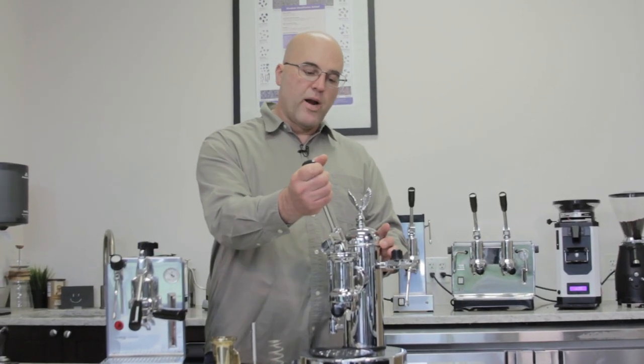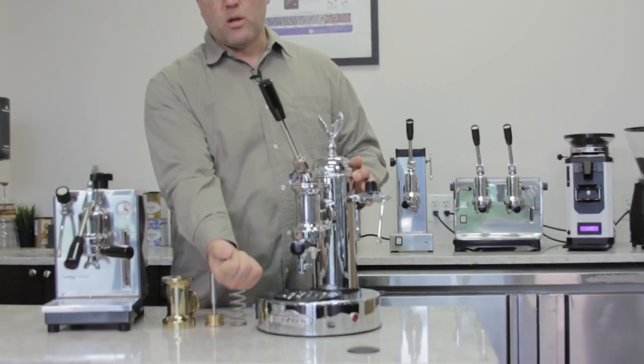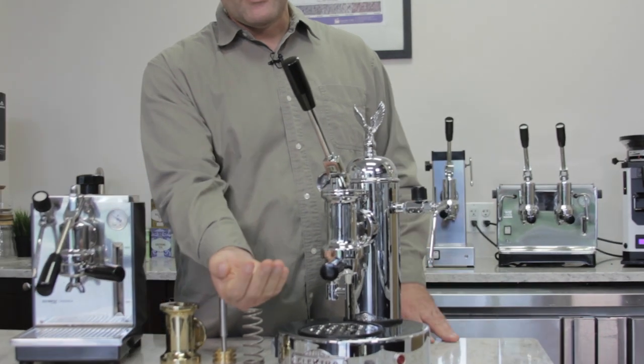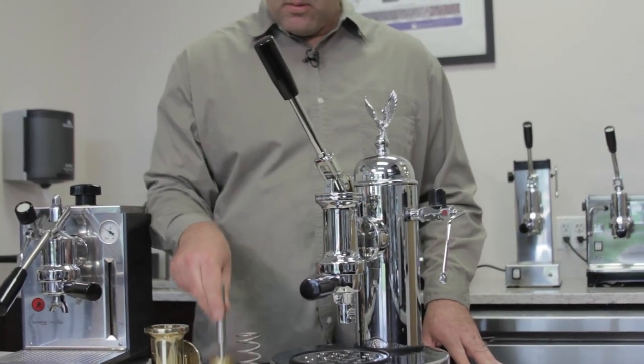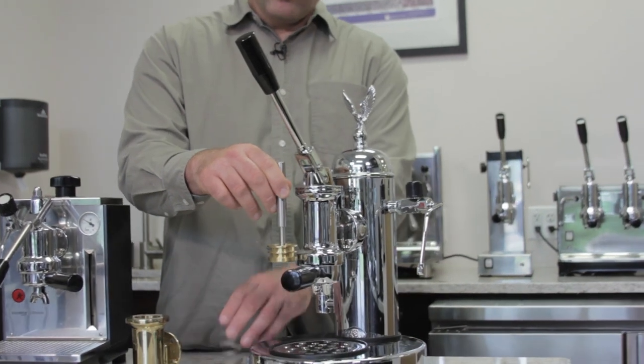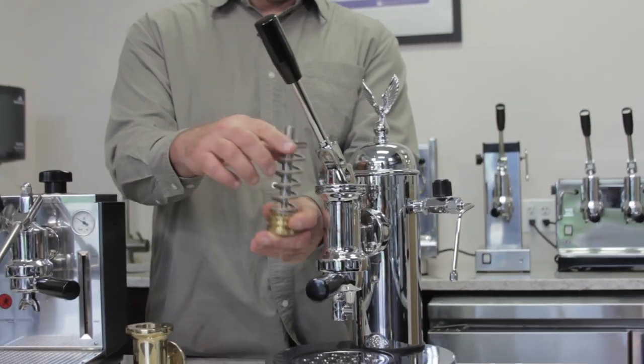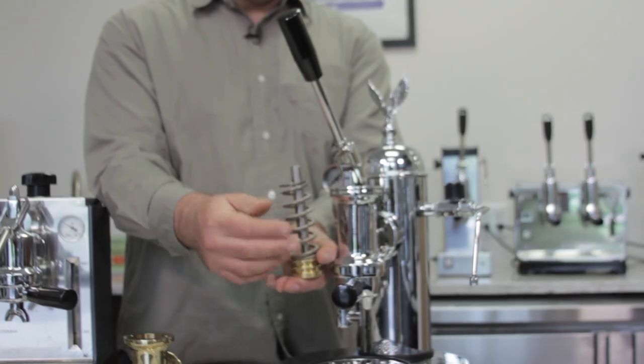So the Electra machine has a spring piston, where you need to pull the lever down against the spring, and then the spring brings the lever up, while the piston inside is going down. And again, that's the spring that's inside, that pushes the piston down.